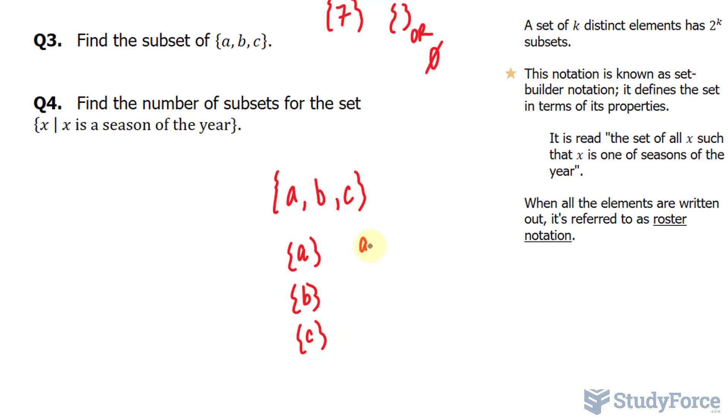We could also have A, B; A, C; B, C. That's seven. Lastly, an empty set also counts as a subset.